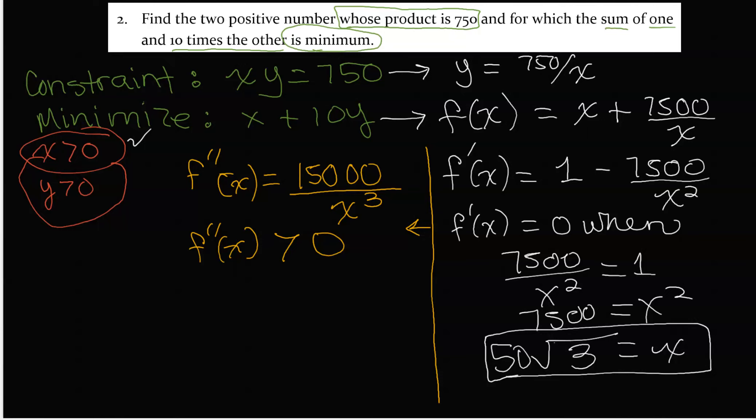It is always concaving up, and that means the critical point that we found would have to be our minimum. Concave up, so that critical point must be our minimum.